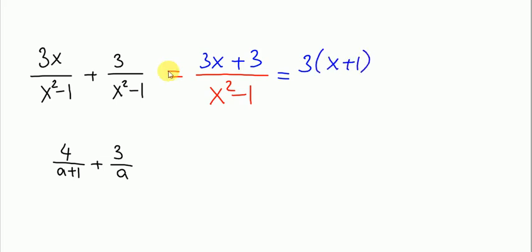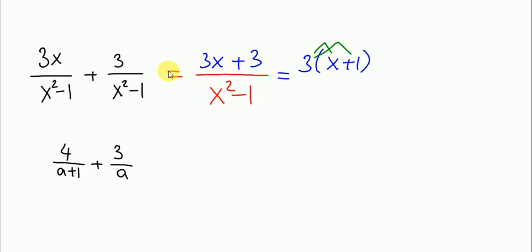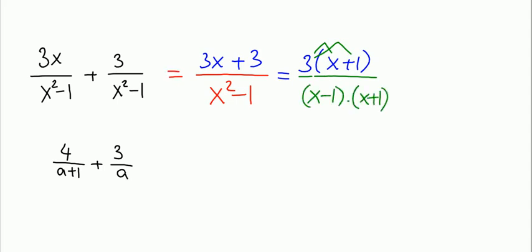We can watch previous videos to understand how to group algebraic expressions. To show it here: 3 times x gives us the first term, and 3 times 1 gives us the second term. So we have 3 times (x plus 1) over x squared minus 1. Now, x squared minus 1 factors as (x minus 1)(x plus 1), so x plus 1 cancels out, and finally we have 3 over x minus 1.